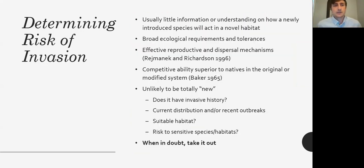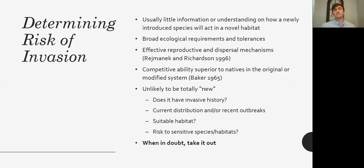What makes a species invasive? We know what happens once an invasive species propagates, but if we're looking at a brand new exotic species, how can we tell whether or not it's going to be invasive? Unfortunately, if it's an especially novel exotic there's likely not much information on how it will grow, say, in Tennessee if it came from East Asia. We can look at hallmarks like whether it has a wide range of ecological tolerances — can it survive in both uplands and bottomlands?